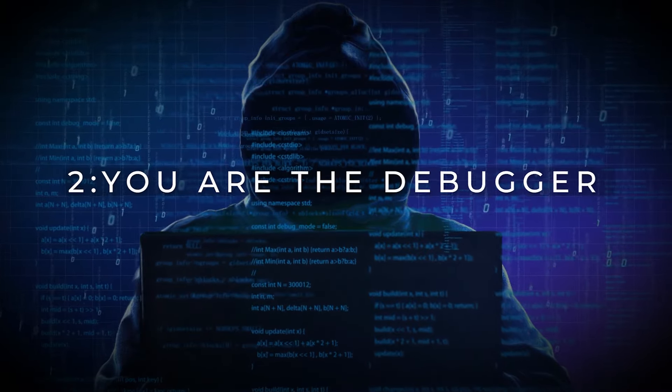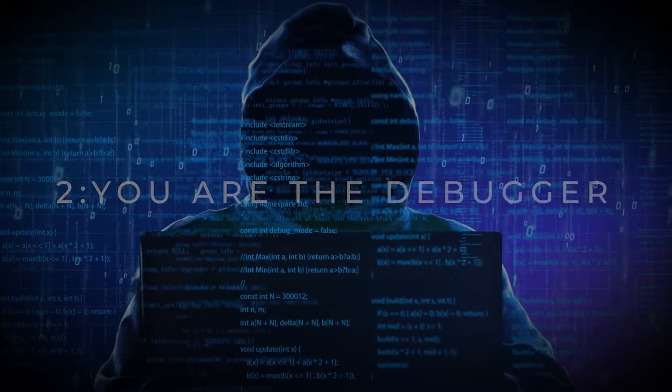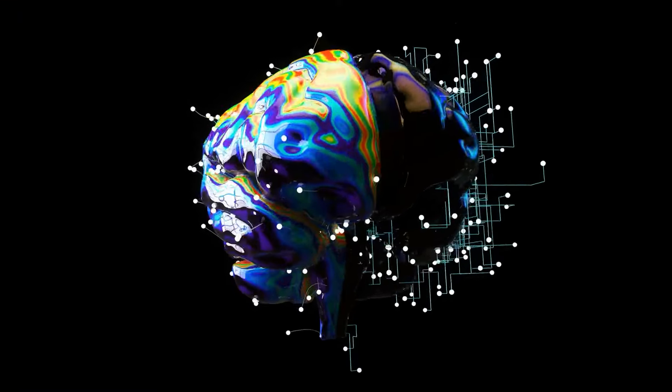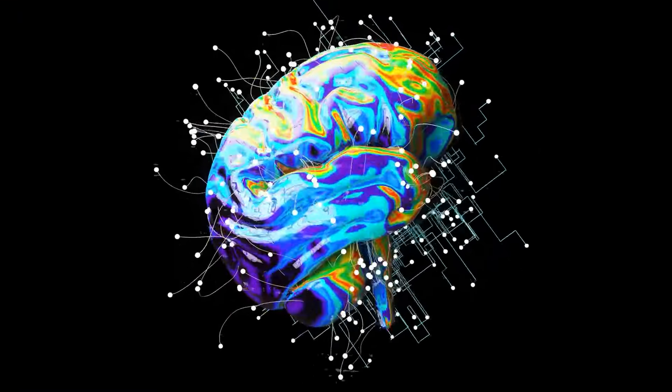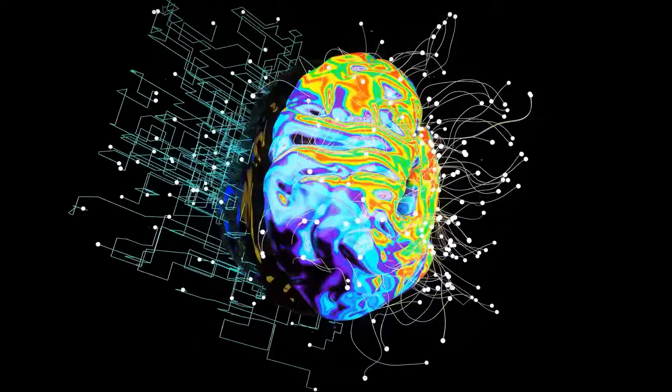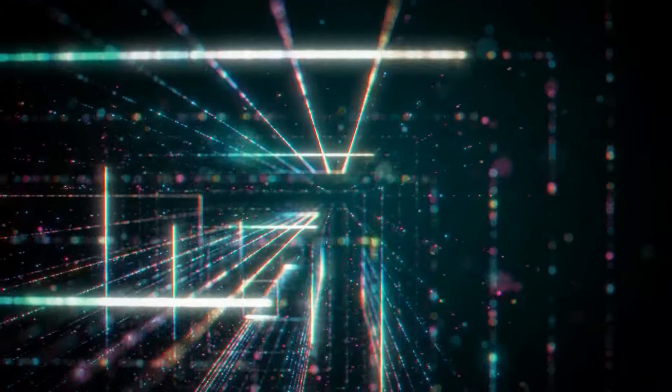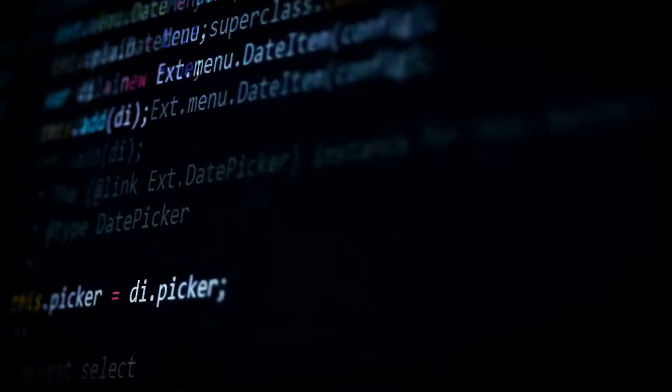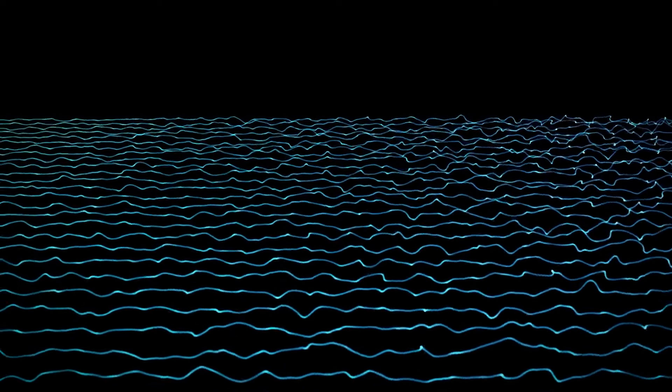You are the debugger. Plot twist: we're not just watching the simulation, we're fixing its bugs. Think of yourself as a cosmic programmer, where your thoughts are like lines of code affecting the universe's output. The double-slit experiment? That's you running a system check.